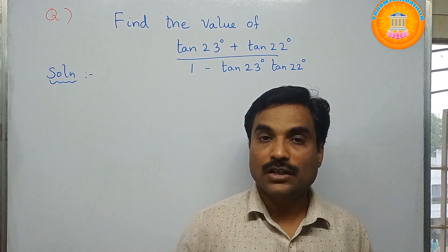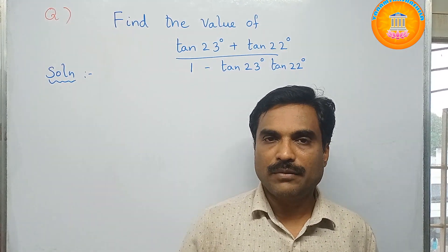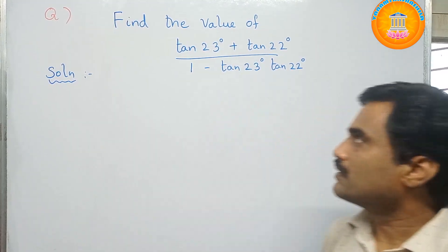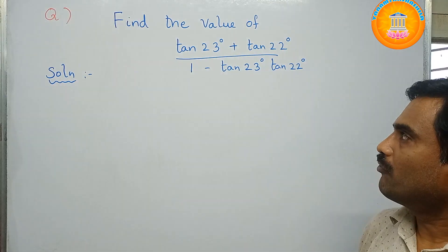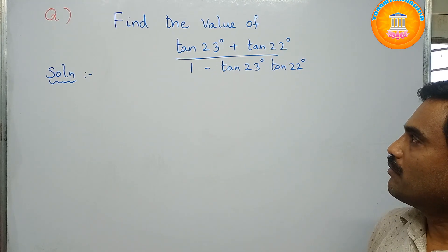Hi, welcome to my channel Yanam Takshisila. In this new video, I'm going to solve a mathematical problem under the topic trigonometry. So the problem is find the value of tan 23 degrees plus tan 22 degrees by 1 minus tan 23 degrees tan 22 degrees.